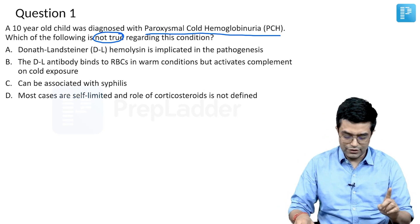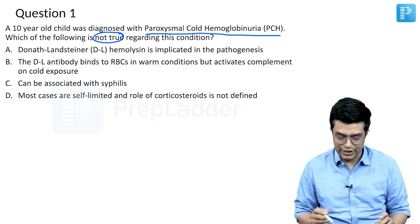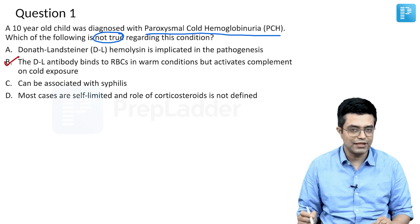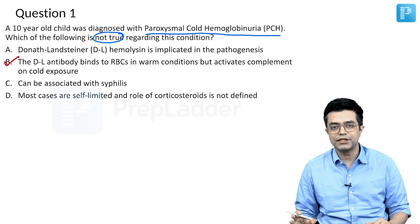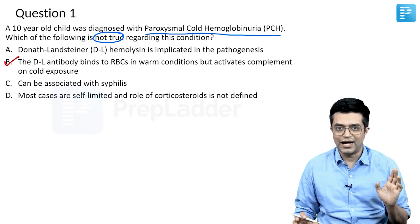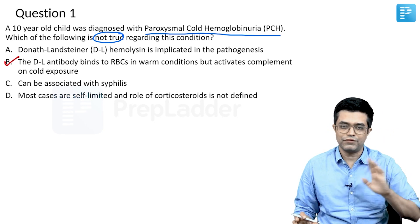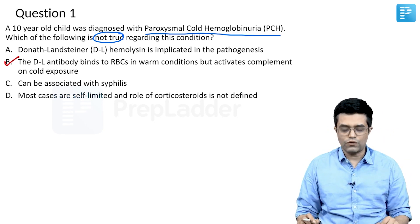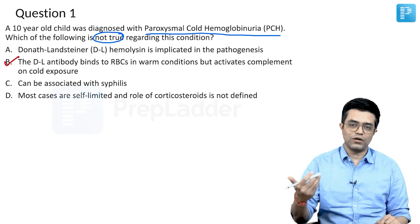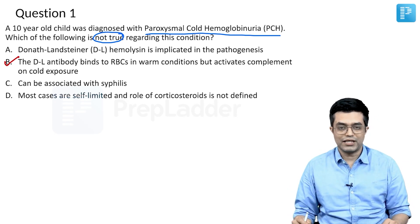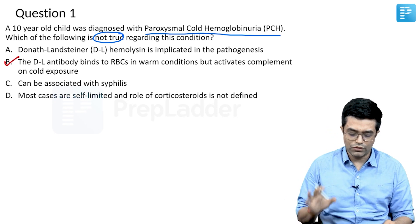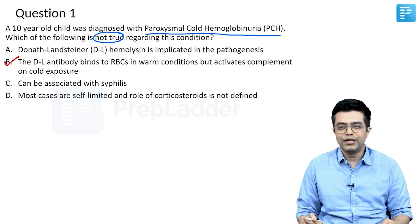Option B is clearly wrong, making it the answer to this question. Most cases are self-limited — in fact, more than 50% of cases have only a single episode and do not have further episodes in life. The role of corticosteroids is not defined; giving or maintaining steroids has not been shown to affect the natural history of the disease.